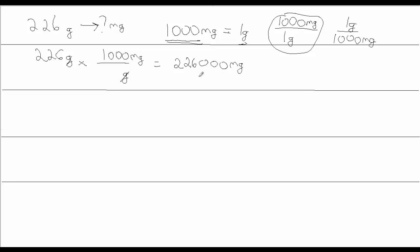That number should feel right, because there should be a lot more milligrams than in my starting 226 grams. Converting to scientific notation, the coefficient is 2.26. I compensate for that by multiplying by 10 to the fifth — because I shifted the decimal 1, 2, 3, 4, 5 places. Don't forget the units: milligrams.